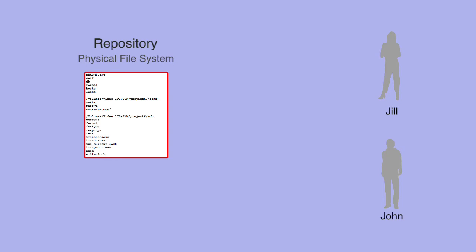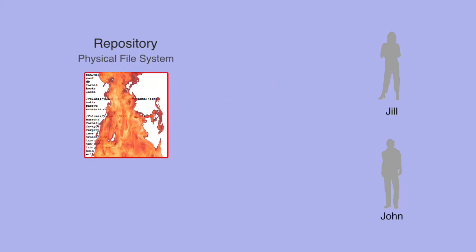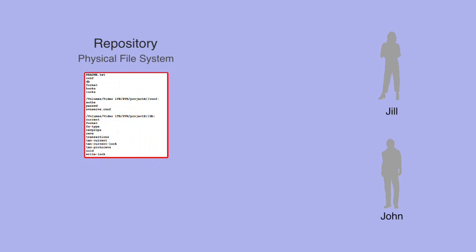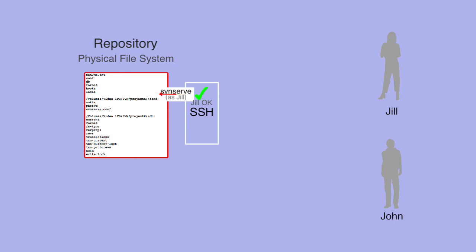Every user that requires access to the repository's virtual file system requires the same access to the repository's physical file system. This means that any user with write access to the virtual file system can manipulate the physical repository files too, and in so doing could irretrievably corrupt them. If you use the SVN plus SSH protocol, you face similar issues securing the repository file system as when using the file protocol. Each user accesses the repository through a local account on the host server, and the SVN serve process runs under that local user's account, requiring direct access to the repository's physical file system. This is covered in more detail in section 6.2, SSH and SVN serve.